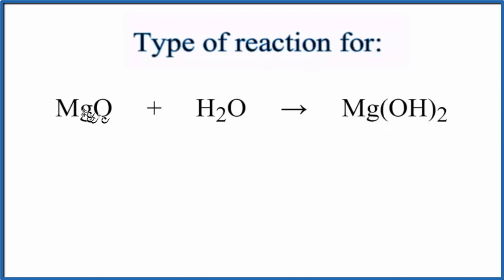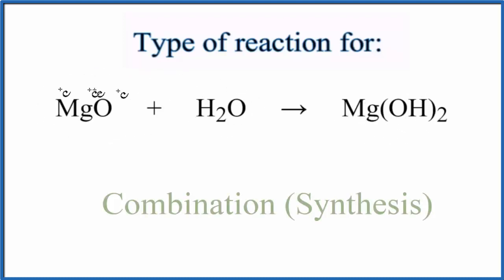When we look at this reaction we have two substances in our reactants. They're combining to form just one substance in the product. Because they're combining, two things going to one, that's a combination reaction.